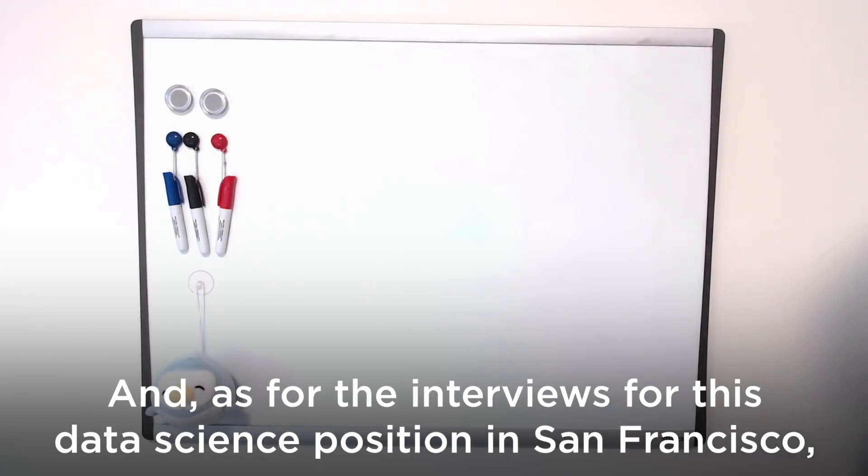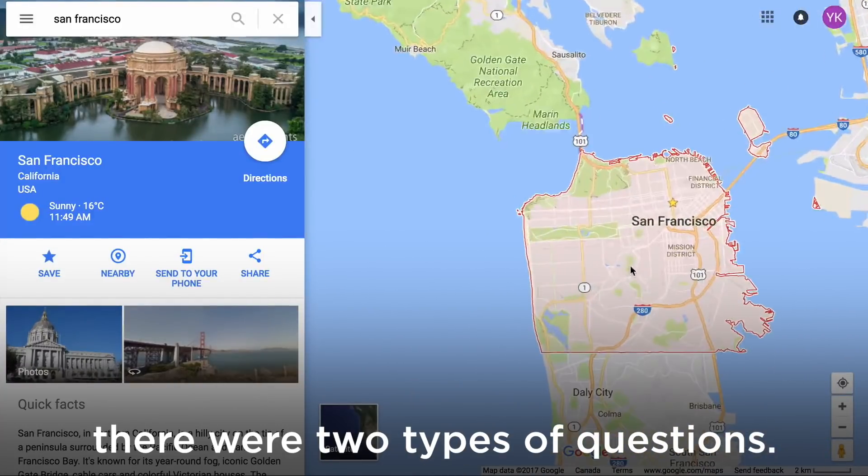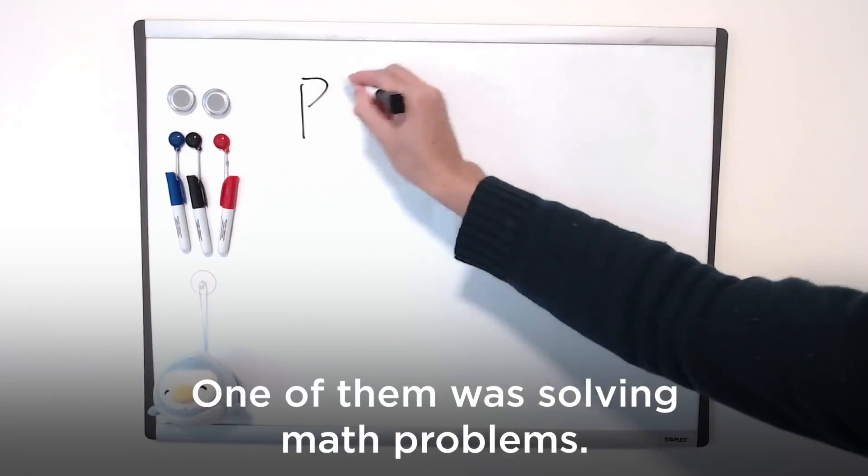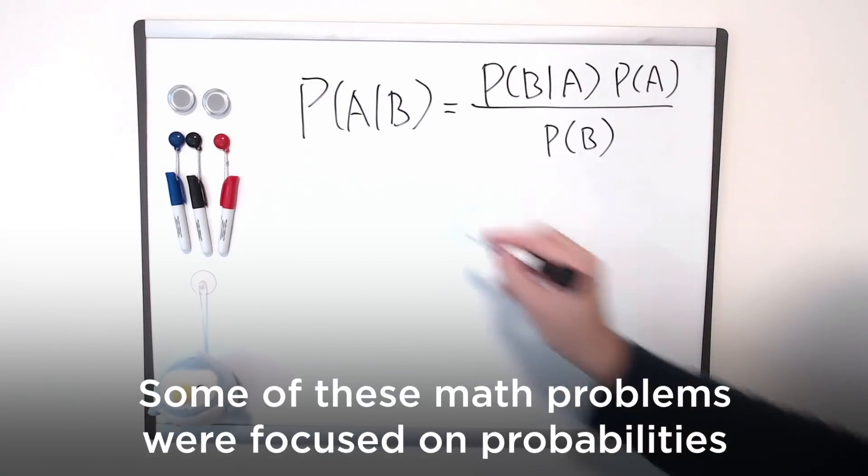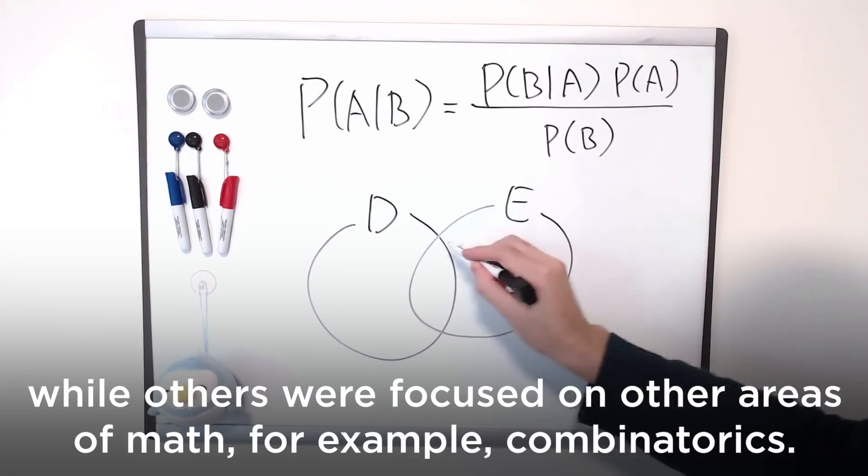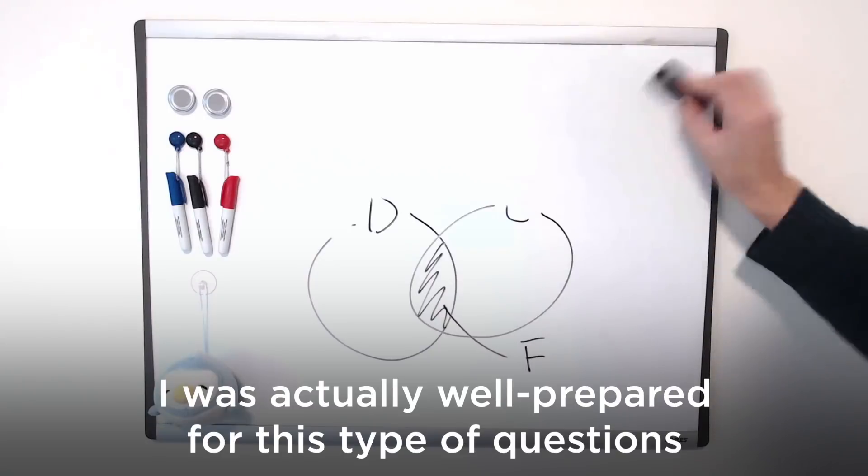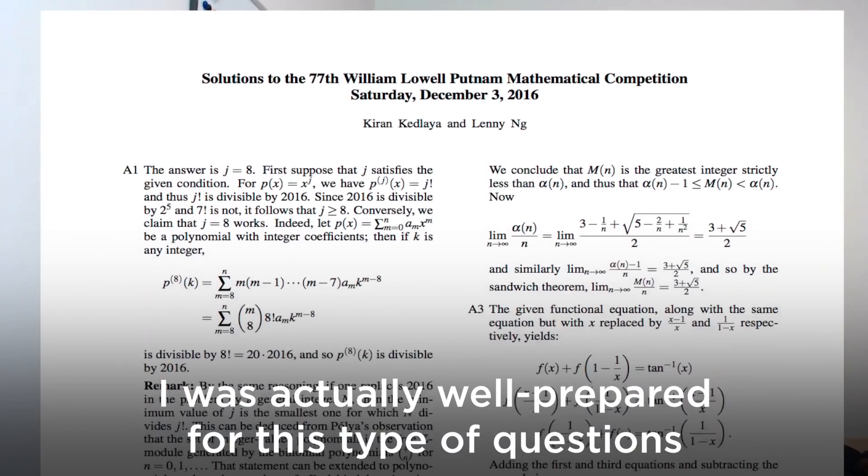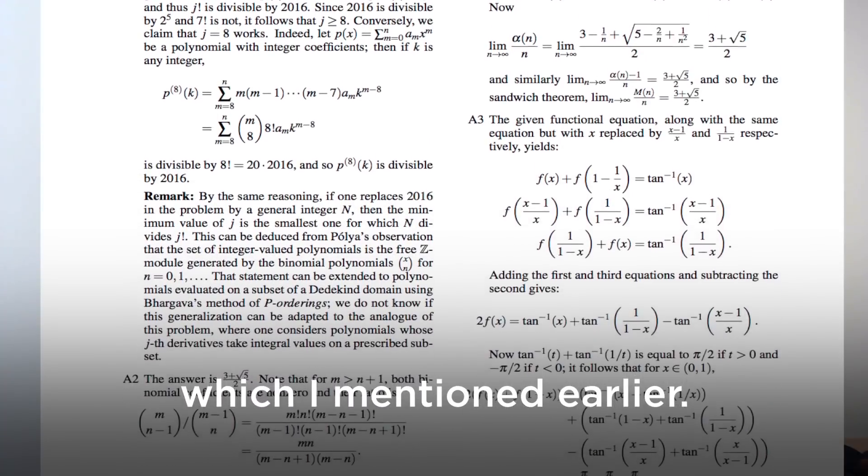And as for the interviews for this data science position in San Francisco, there were two types of questions. One of them was solving math problems. Some of these math problems were focused on probabilities, while others were focused on other areas of math, for example combinatorics. I was actually well prepared for this type of questions because of my experience with competitive math problems, which I mentioned earlier.